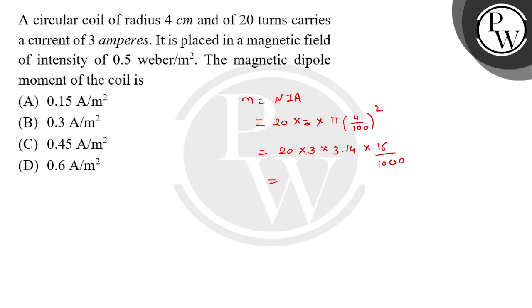So if we multiply all these values like 20 multiplied by 3 is 60, 60 multiplied by 16 is 960, into 3.14, divided by...